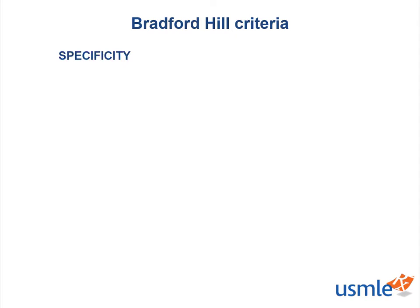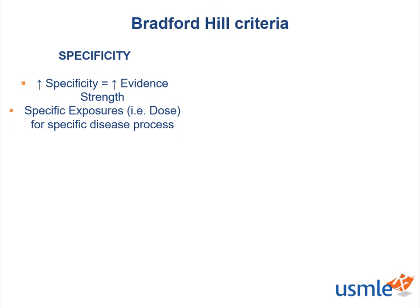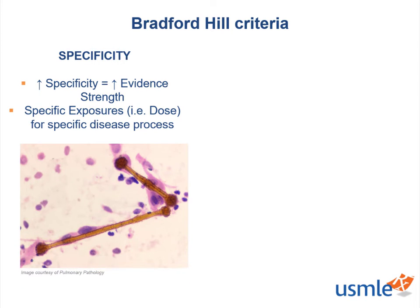Moving on to specificity: this criterion suggests the more specific the relationship, the more likely the exposure causes disease. In today's era, we usually attempt to pin down the dose of exposure to the chemical or biologic agent. Clinically, specificity can be applied to asbestos exposure and lung disease, such as asbestosis, mesothelioma, and other fibrotic pathologic processes. In modern medicine, we attempt to demonstrate a specific molecular mechanism between the agent and disease pathology.